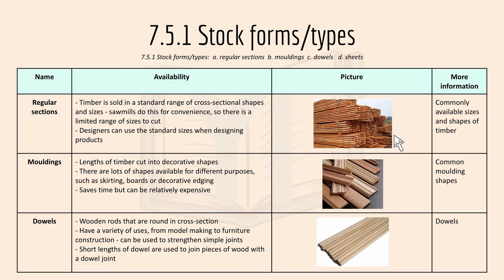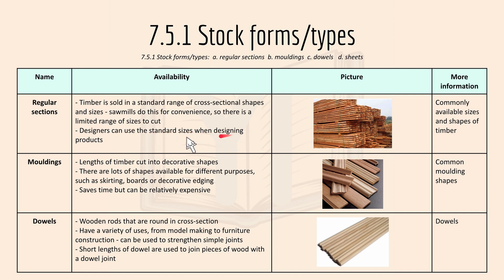We'll move on now to 7.5.1 stock forms or types, which include regular sections, mouldings, dowels, and sheets. For starters, regular sections: timber is sold in a standard range of cross-sectional shapes and sizes. Saw mills do this for convenience, so there's a limited range of sizes to cut, and designers can use the standard sizes when designing products. Here's a picture of the regular sections — commonly available sizes and shapes of timber.